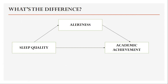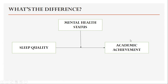So what is the difference between a mediator and a moderator? You can see a mediator as an intermediate step between two variables. For example, sleep quantity and quality as an independent variable can influence academic achievement as a dependent variable, but it can do so through the mediating variable of alertness. In a mediating relationship, you can draw an arrow from the independent variable to the mediator, and then from the mediator to the dependent variable. In contrast, a moderator itself influences the relationship between two variables.